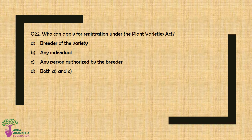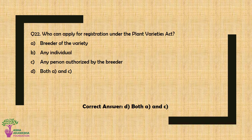Question No. 22: Who can apply for registration under the Plant Varieties Act? Option A: Breeder of the Variety, Option B: Any Individual, Option C: Any Person Authorized by the Breeder, or Option D: Both Option A and Option C. The correct answer is Option D — Both the Breeder of the Variety and any Person Authorized by the Breeder.